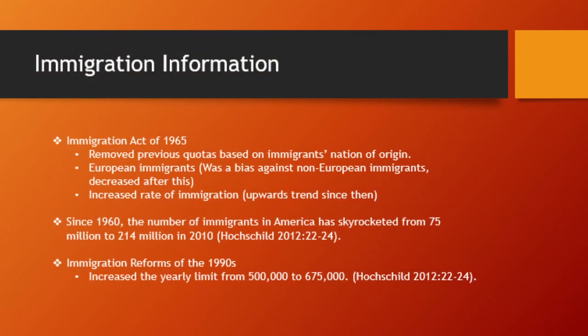Immigration numbers in the United States were at their lowest in the early 1960s. In 1965, a slew of legislation reforming immigration began. The Immigration Act of 1965 got rid of nationality quotas and focused on having skilled workers immigrate to America rather than focusing on their country of origin. During the second half of the decade, immigration into America began to increase and has maintained an upward trend ever since.